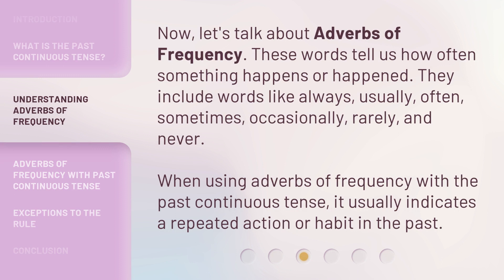Now let's talk about adverbs of frequency. These words tell us how often something happens or happened. They include words like always, usually, often, sometimes, occasionally, rarely, and never. When using adverbs of frequency with the past continuous tense, it usually indicates a repeated action or habit in the past.